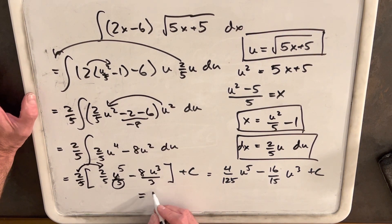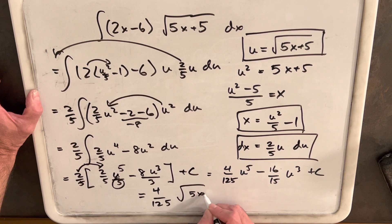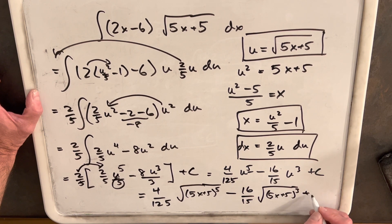So our final solution, hope I didn't forget anything, is 4 over 125 square root of 5x plus 5. But this is to the 5th, we have our 5th here. Then this one's going to be minus 16 over 15 u cubed. So we're going to have the square root of 5x plus 5 cubed plus C.